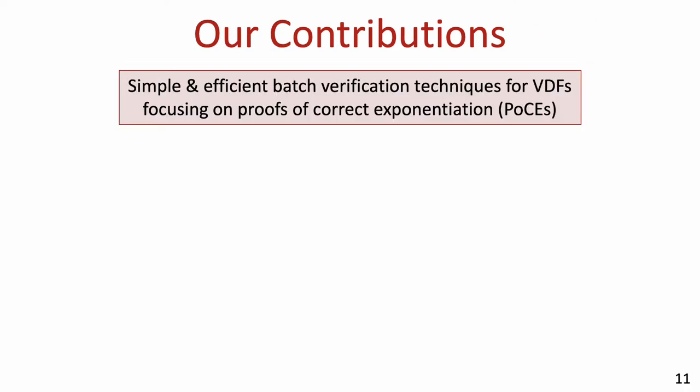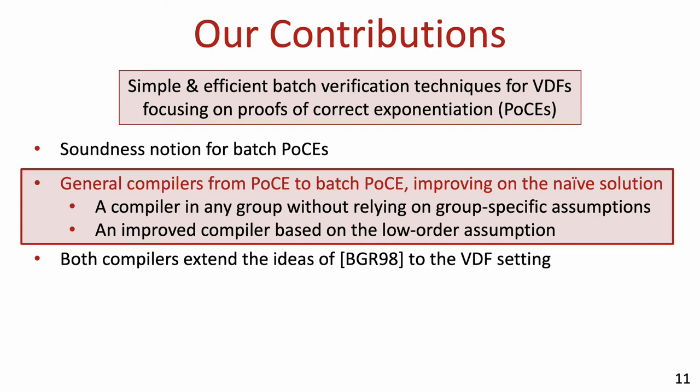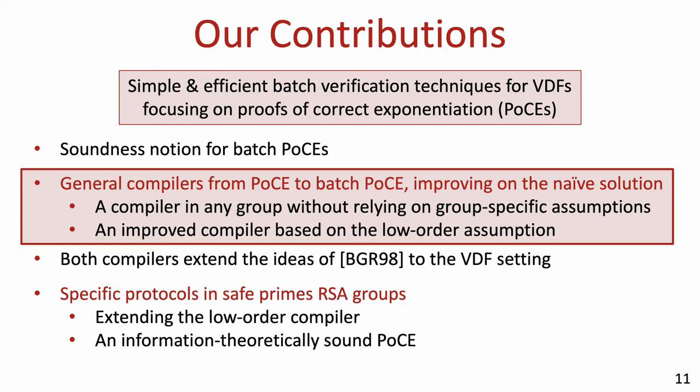What we do in this work is present general and modular batch verification techniques for VDFs that are based on a proof of correct exponentiation, or a POCE for short. We define soundness notions for batch POCEs, and present two compilers that take any single instance POCE and compile it into a batch POCE. The first compiler doesn't make any group-specific assumptions and can be applied in any group. The second compiler has better parameters but relies on the low-order assumption. Additionally, we have two specific protocols in RSA groups where the modulus is the product of two safe primes. We show how to extend the second compiler to these groups, and we present a single instance POCE which is information-theoretically sound in these groups.